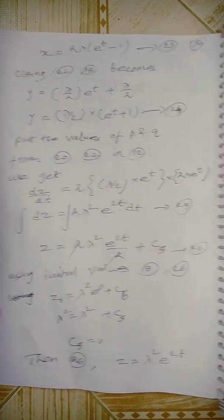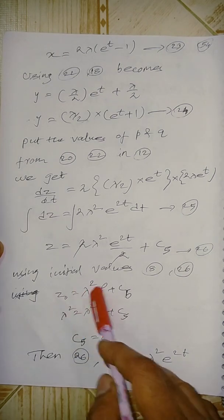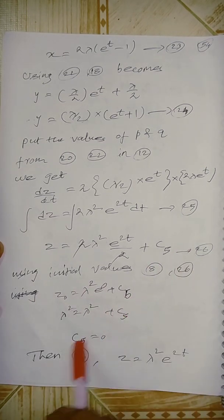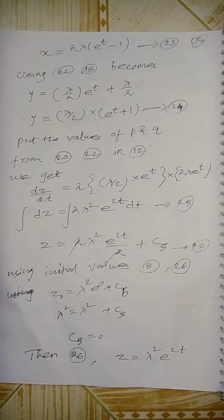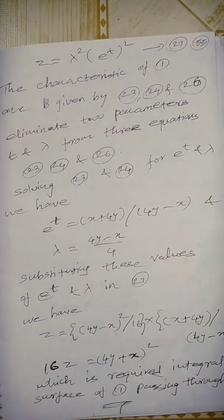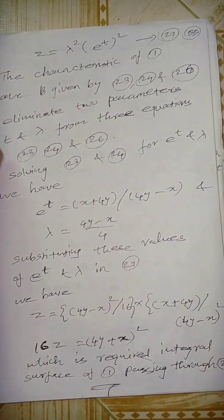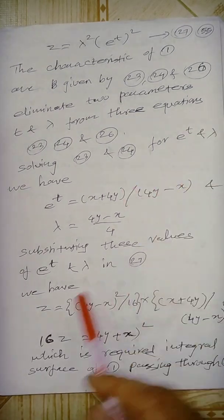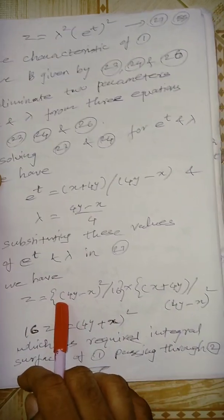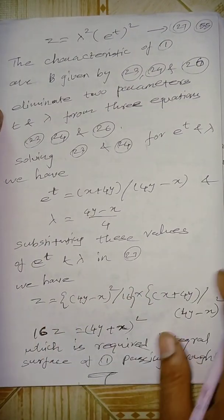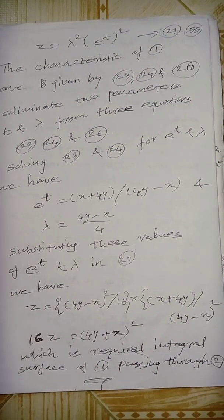Integrating dz/dt = 2pq, we get z = lambda²·e^(2t) + C5. Using initial values z0 = lambda² when t0 = 0: lambda² = lambda²·e^0 + C5, so C5 = 0. Thus z = lambda²·e^(2t). Now x, y, z are expressed in terms of lambda and t. Eliminating e^t and lambda gives the final answer z.